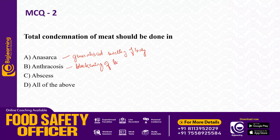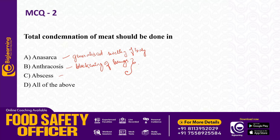Blackening of the lungs occurs in animals living in a polluted environment chronically — the lungs become blackened. Abscess is different: it is a localized swelling. In anthracosis and abscess, we remove the affected lungs; abscess is localized.